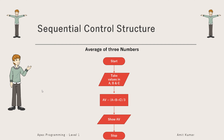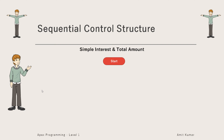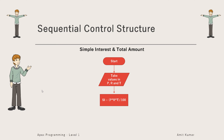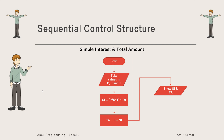For simple interest and total amount, we start by taking values of principal amount, rate of interest, and time duration in variables P, R, and T respectively. We multiply P, R, and T, divide by 100, and store the result in variable SI. We then add principal amount with SI and store it in TA. Finally, we show SI and TA, and stop the flowchart.